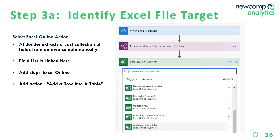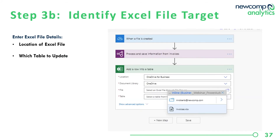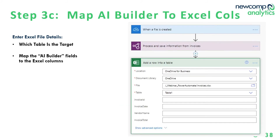In our flow, we've also added an additional step to add a row into a table in Excel. What we want to do is take the fields passed from AI Builder and store them in Excel. We've identified the location of the Excel file on OneDrive and the specific file 'Invoices'. We've set up a table called 'Table 1' and here are the columns we want to populate: Invoice ID, Invoice Date, Vendor Name, and Invoice Total. Every time a file is created, it'll be passed to AI Builder, which will decipher the content of the invoice even in a variety of formats, then pass these fields into the Excel file.